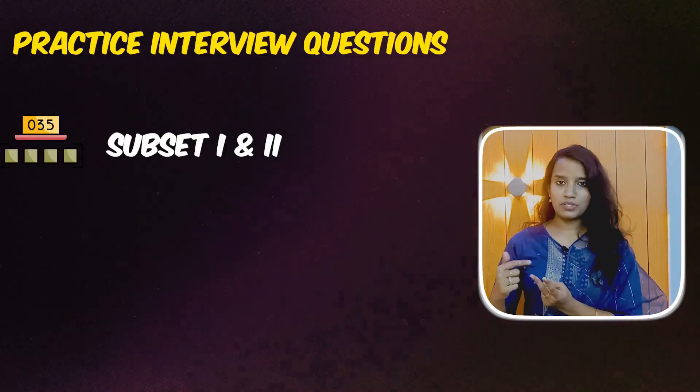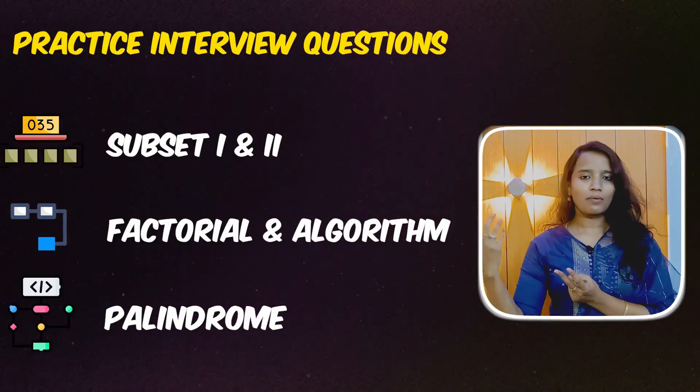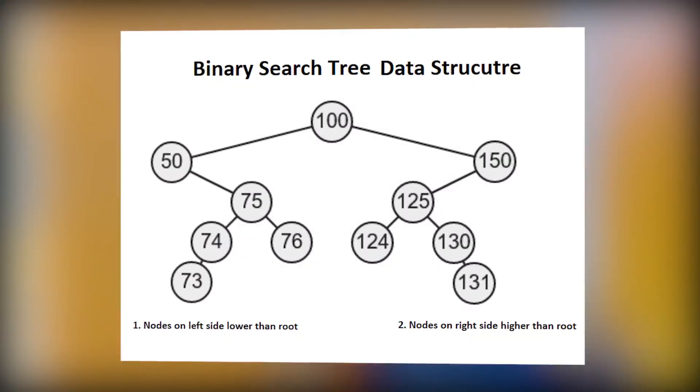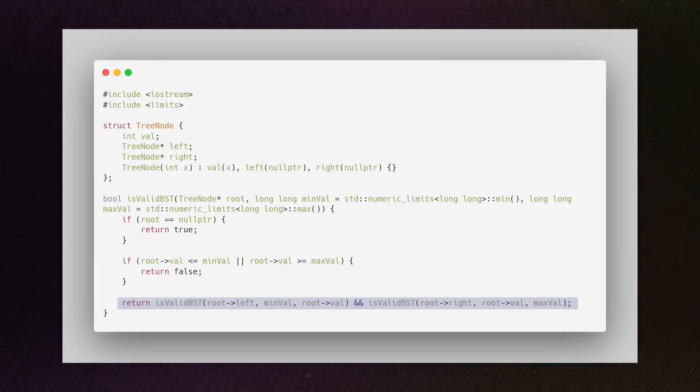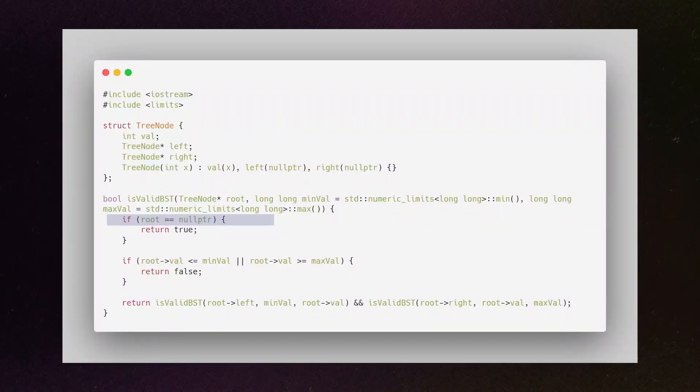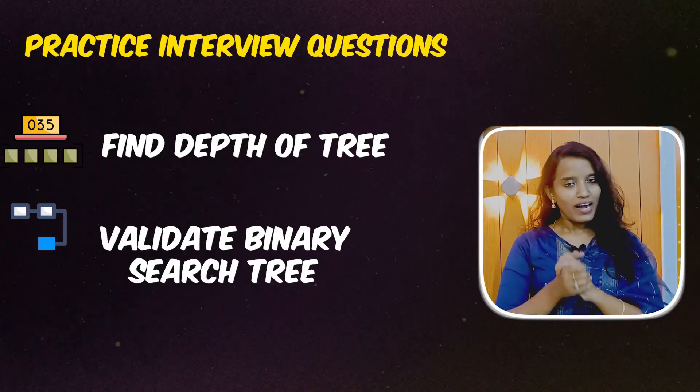Tree-based problems are a good use case for recursion. Practice questions include subsets, factorial, and palindrome. A binary tree has a node with left and right children — a tree is an undirected acyclic graph. Use recursion to iterate over left and right children. Check the root node as the base case. Use depth-first search, and know in-order, pre-order, and post-order traversal. Practice questions: find the depth of the tree, validate binary search tree, reverse binary search tree.